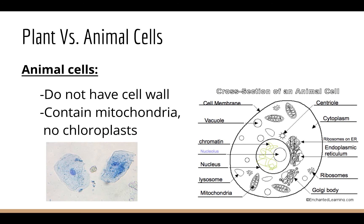Animal cells don't have a cell wall — they just have an outer membrane that surrounds the cell. They do have mitochondria, where cellular respiration takes place, but they do not have any chloroplasts because animals do not photosynthesize.